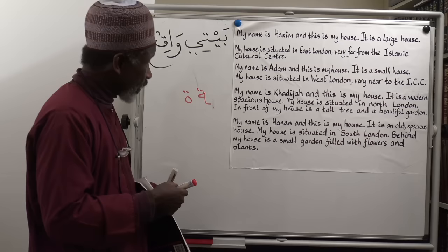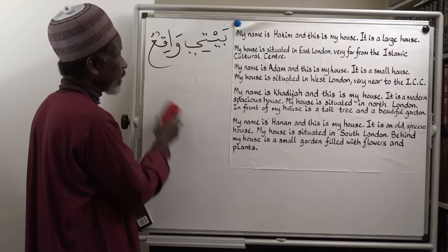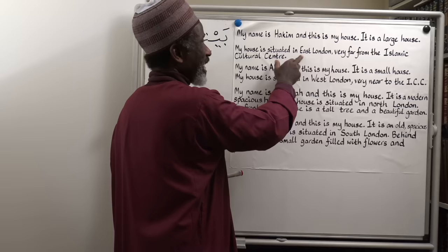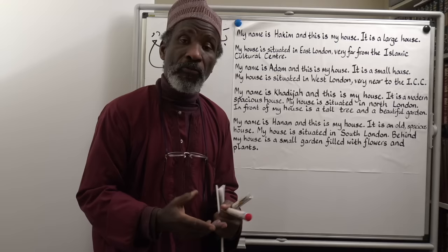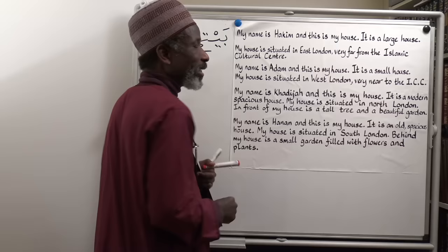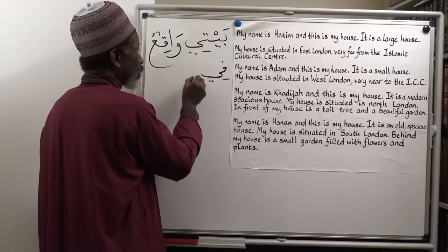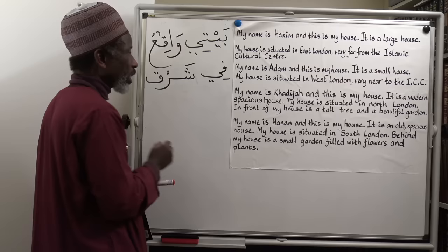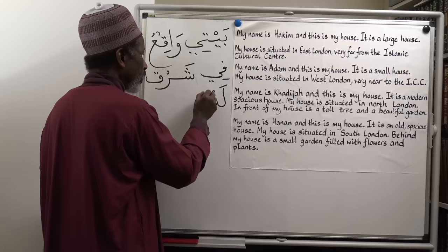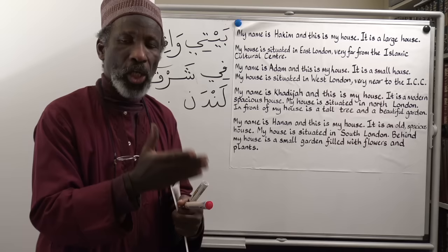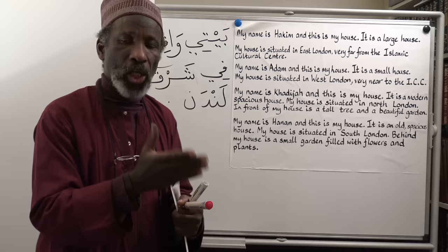Without a ta-marbuta we can assume 99.9% that the word is masculine. So bayti waqiun — my house is situated. And then in east London: in is Fi, east is Sharq. Bayti waqiun fi Sharq London — my house is situated in east London.